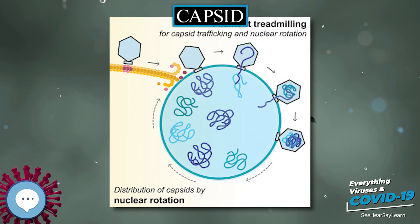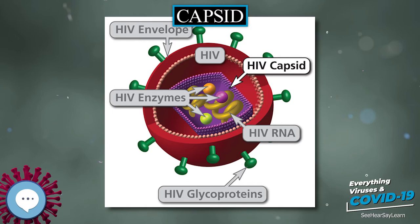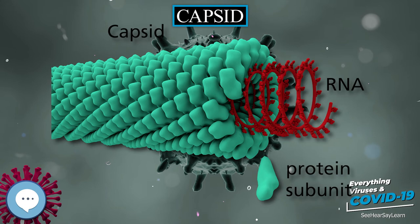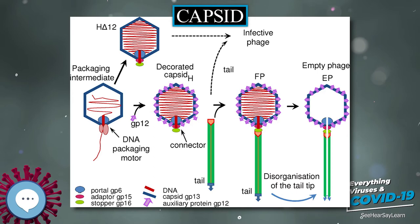Geometric examples for many values of H, K, and T can be found at the list of geodesic polyhedra and Goldberg polyhedra. Many exceptions to this rule exist; for example, the polyomaviruses and papillomaviruses have pentamers instead of hexamers in hexavalent positions on a quasi-T equals 7 lattice.